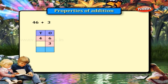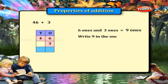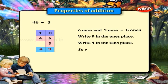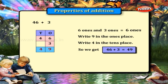46 plus 3. That is 6 ones and 3 ones is equal to 9 ones. So write 9 in the ones place. Write 4 in the tens place. And we get 46 plus 3 is equal to 49.